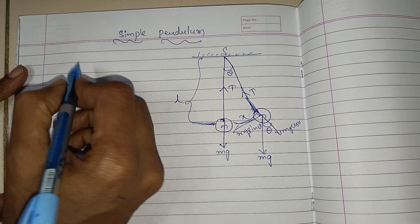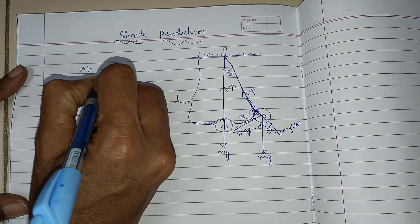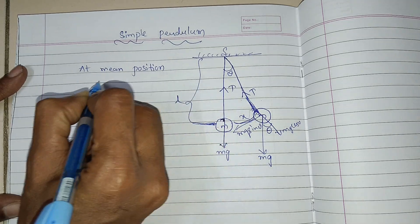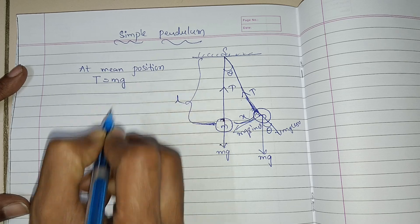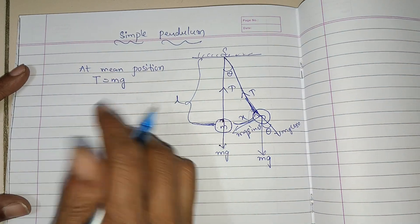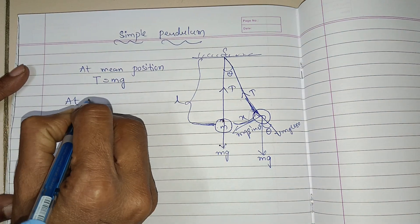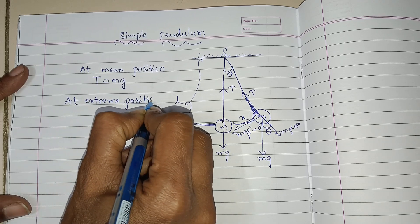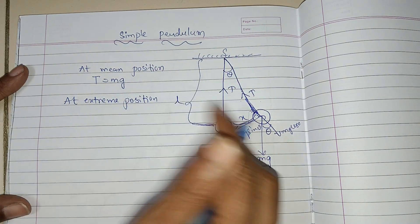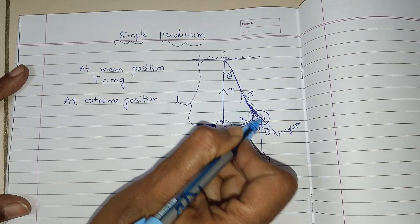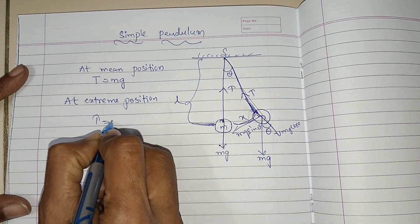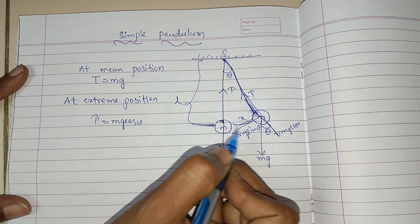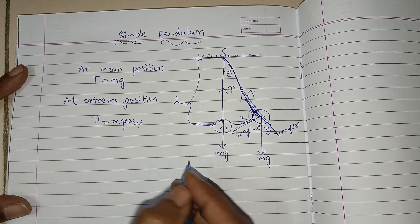Now we will go for the derivation. At mean position, what are the forces balancing? At mean position, tension will be balanced by the weight of the bob — that is T is equal to Mg. At extreme position, the balance of forces: T is equal to Mg cos theta. Tension will be balanced by the component of weight that is Mg cos theta.